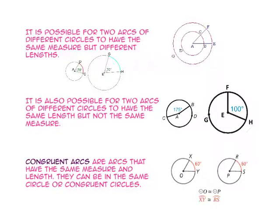It is also possible for two arcs of different circles to have the same length but not the same measure. Notice that the length of arc CB is congruent to the length of arc FH. However, the measure of arc CB is 175 degrees, while the measure of arc FH is 100 degrees.